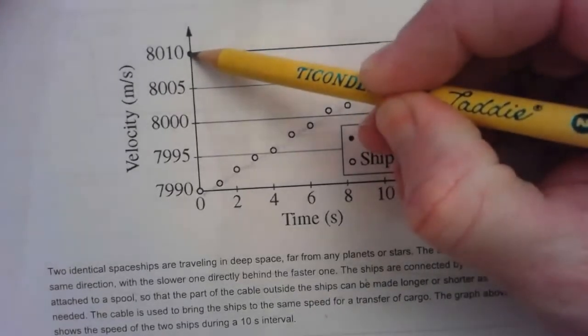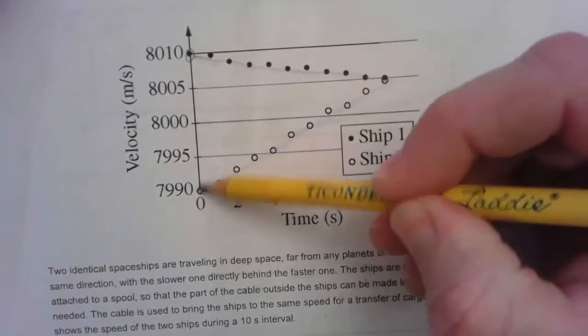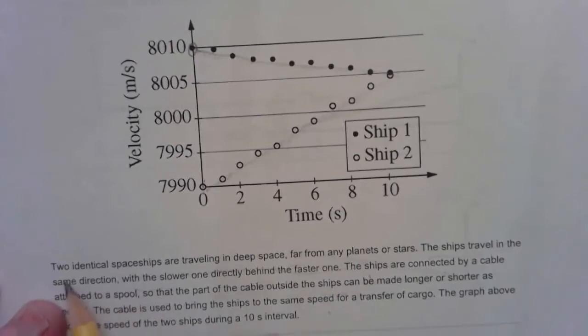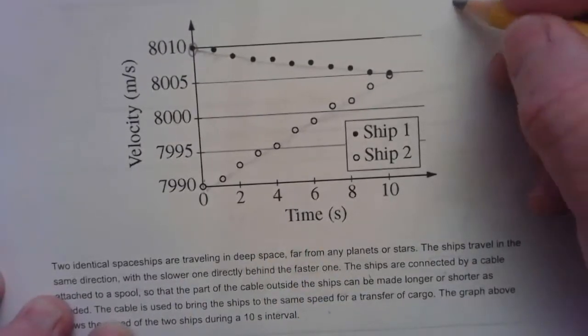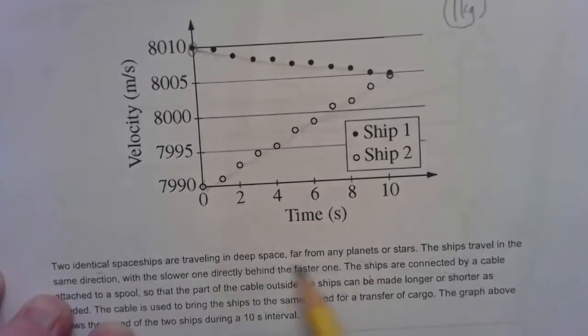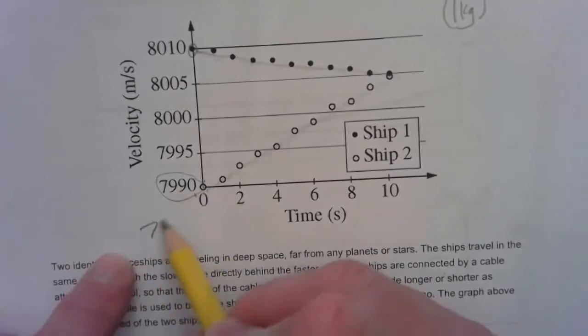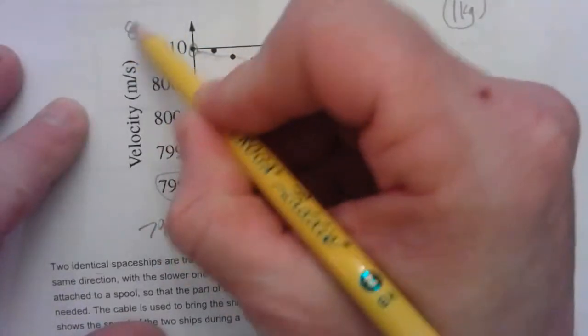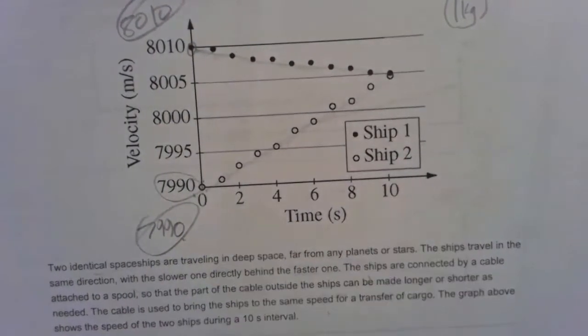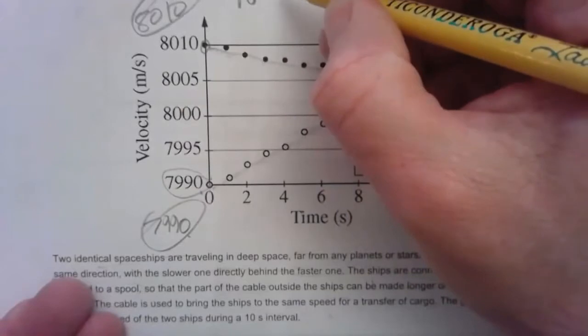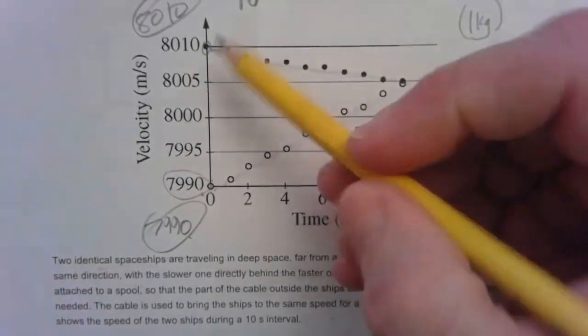So this ship is slowing down a little bit. This ship is speeding up. All of the forces in here are internal. So the total momentum of the system shouldn't change. So if we look at this here at zero seconds, what's the total momentum of the two? They're identical spaceships. So call each one has a mass of one kilogram, right? It doesn't matter. But if they're identical spaceships, we can make them any mass they want as long as it's the same. So if we do that, the momentum of this one is 7,990 initially. And the momentum of this one is 8,010. For a sum of total momentum of the system, and they're moving in the same direction, so that's all right, of 7,990 plus 8,010. So the momentum of the system is 16,000 kilogram meters per second at right here.